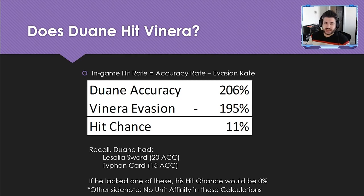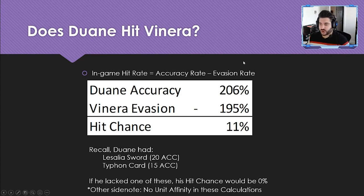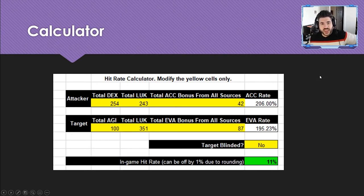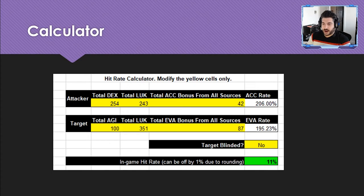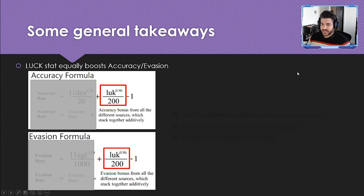One caveat: these stats don't include unit affinity. When units stand within two squares of each other, they get boosts to agility, luck, and dexterity, which would affect these numbers. This overview is purely high-level. There is a calculator by Meow that does the math for you. I also recommend the WTV calculator builder — input your character and their gear, and at the bottom it provides a table with external accuracy totals.